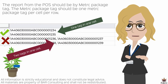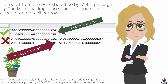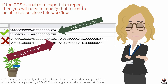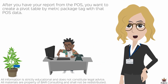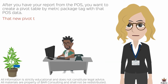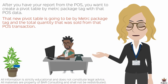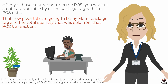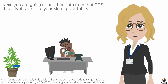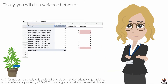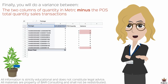The report from the point-of-sale should be by Metrc package tag, and the Metrc package tag should be one per cell per row. If the point-of-sale is unable to export this report, then you will need to modify that report to be able to complete this workflow. After you have your report from the point-of-sale, you also want to create a pivot table by Metrc package tag with that point-of-sale data. That new pivot table is going to be by Metrc package tag and by the total quantity that was sold from those point-of-sale transactions. Next, you're going to pull that data from the point-of-sale pivot table into your Metrc pivot table. And then finally, you will do a variance between the two columns of quantities — Metrc minus point-of-sale total quantity sales transactions.